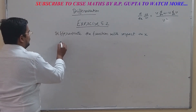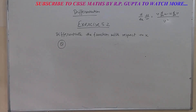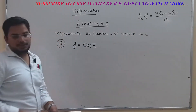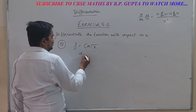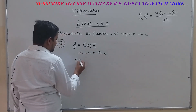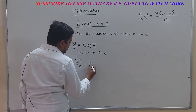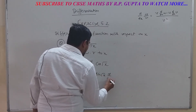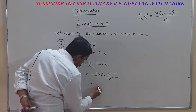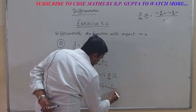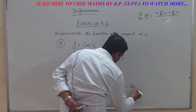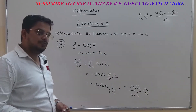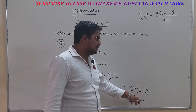Question 8: y = cos(√x). By chain rule: dy/dx = d/dx of cos(√x) = −sin(√x) · d/dx(√x). d/dx of √x = 1/(2√x). So dy/dx = −sin(√x) / (2√x). Note that the √x in the angle and the √x in the denominator are separate and do not cancel.